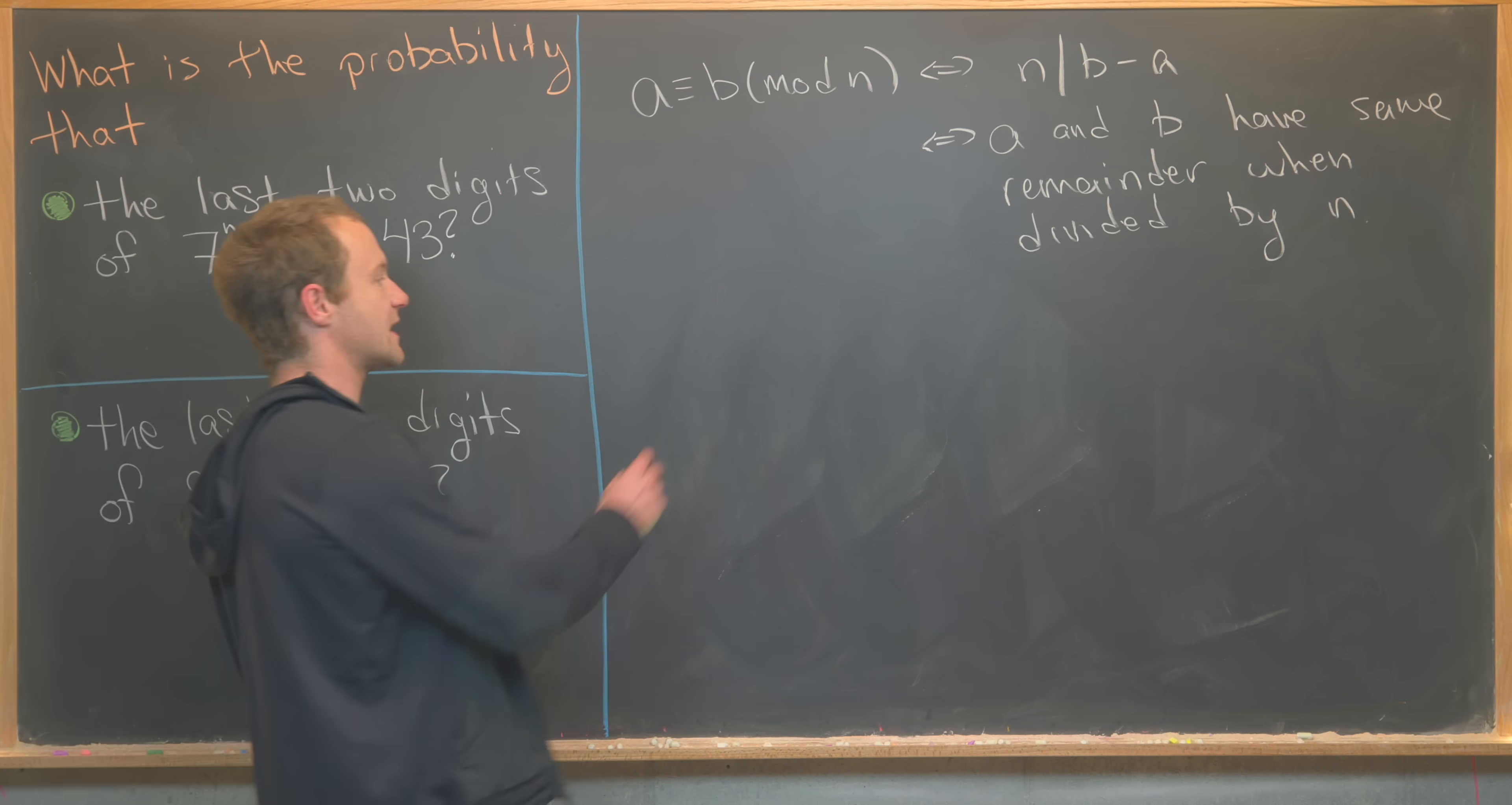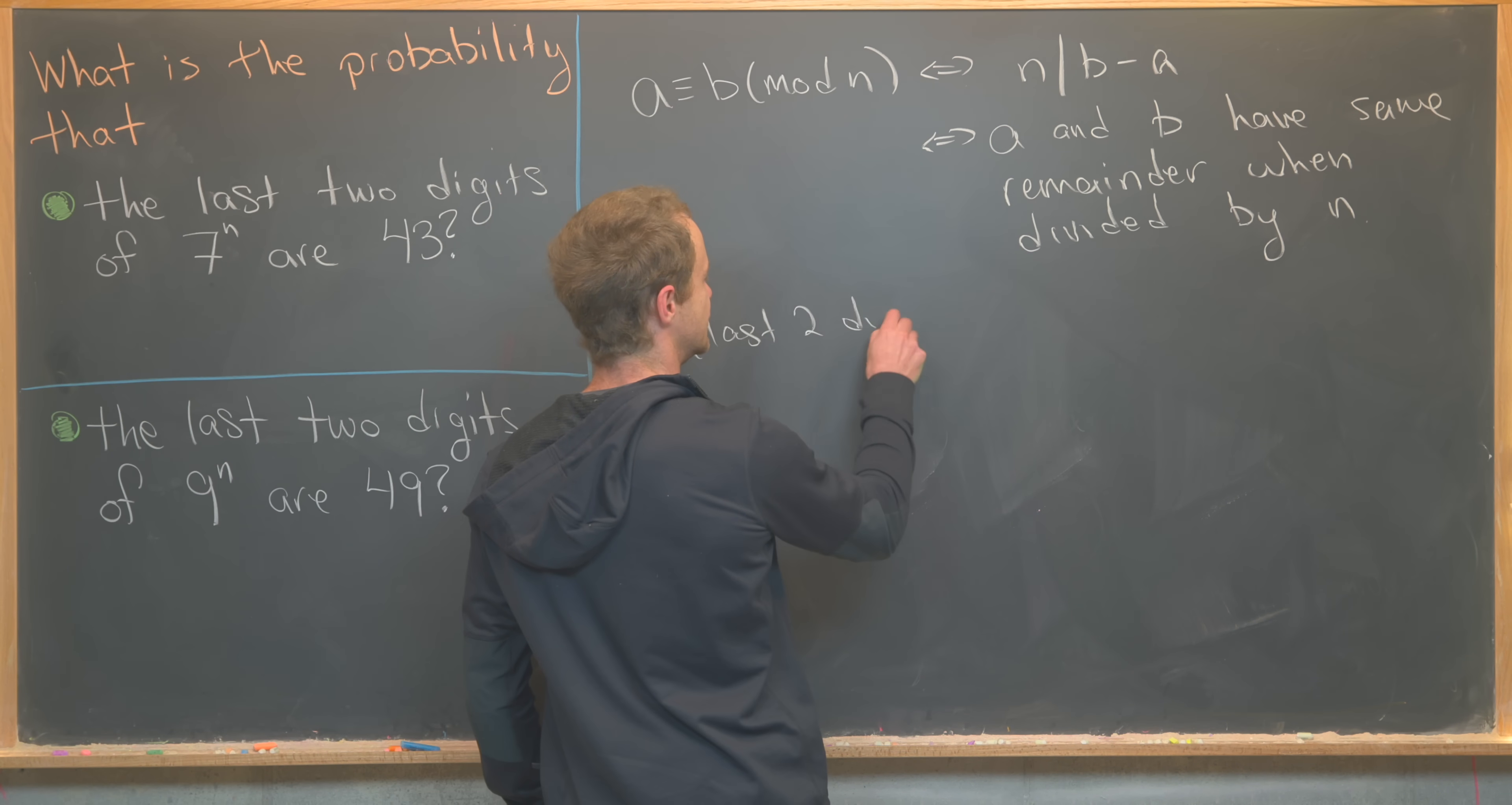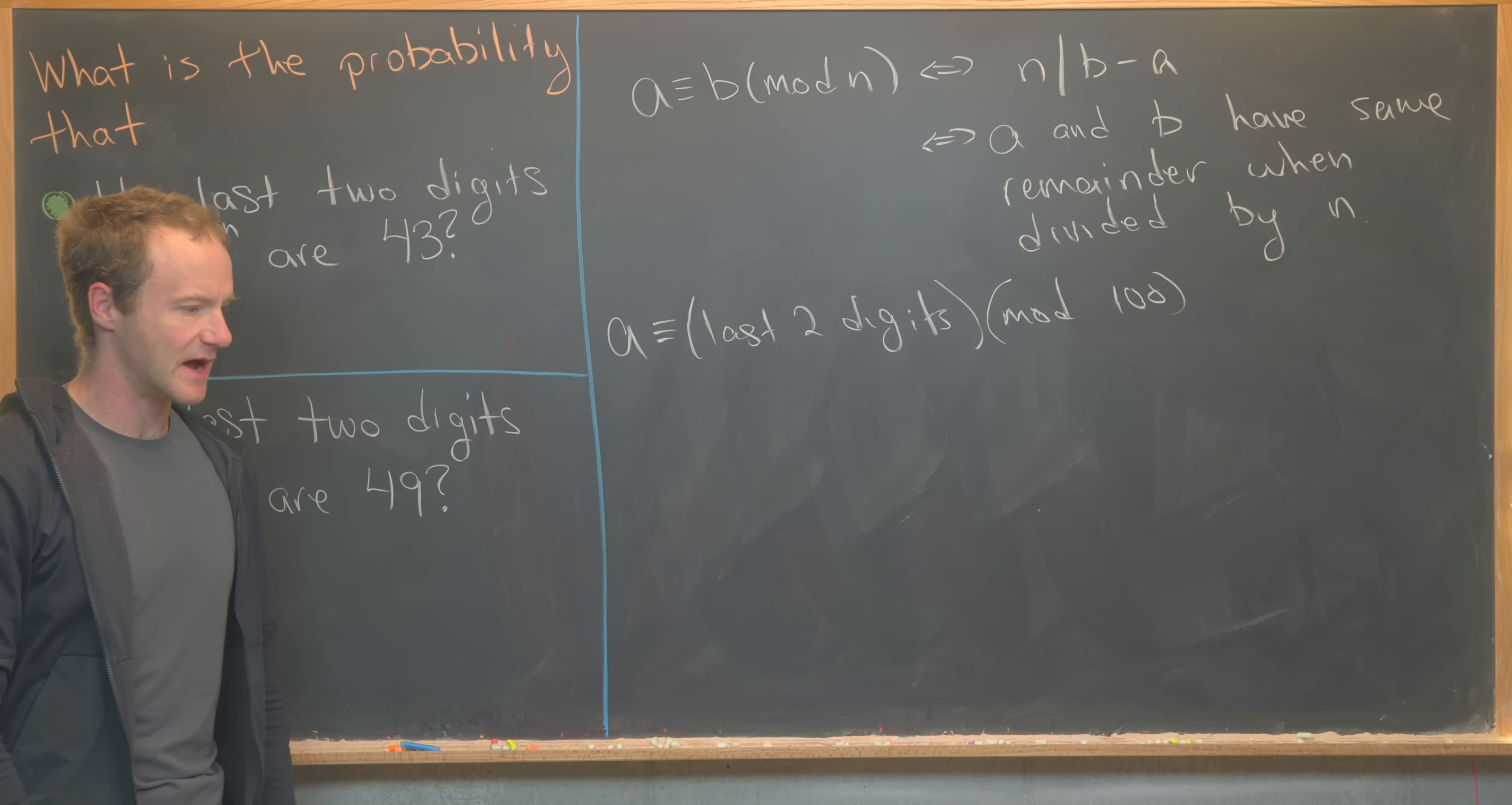So if you take an arbitrary number, let's maybe call it a, then it will be congruent to its last two digits modulo 100. Because think about it, if you divide something by 100 and keep the remainder, which is essentially what's happening up here, then you just get the last two digits.